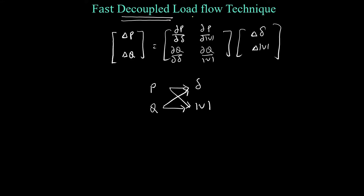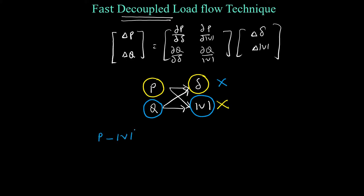In the Fast Decoupled Load Flow method, we say that real power changes are primarily governed by the phase angles, not by the voltage magnitude. Similarly, reactive power changes are primarily affected by the voltage magnitudes, but not the phase angle. This means there is a decoupling effect between real power and voltage magnitude, and a decoupling effect between reactive power and load angle.